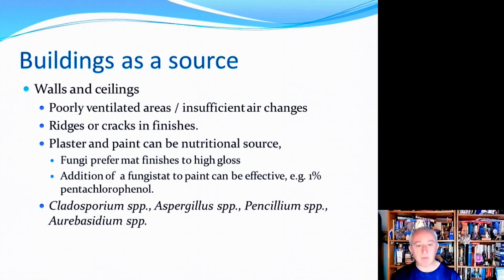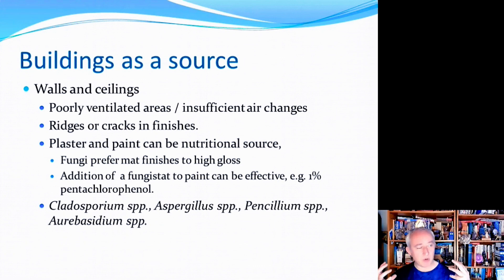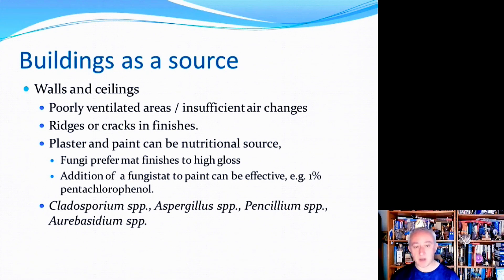With building design, poorly ventilated areas with insufficient air change rates can help fungal spores remain in the area. Niches or cracks — such as a step-over not sealed properly to the wall — are risks. Certain materials such as exposed plaster or paint, or incomplete vinyl, can provide nutritional sources for fungi. Research also shows that fungi prefer matte-finished paint over high-gloss paint, making matte paint surfaces even more of a risk in clean environments.